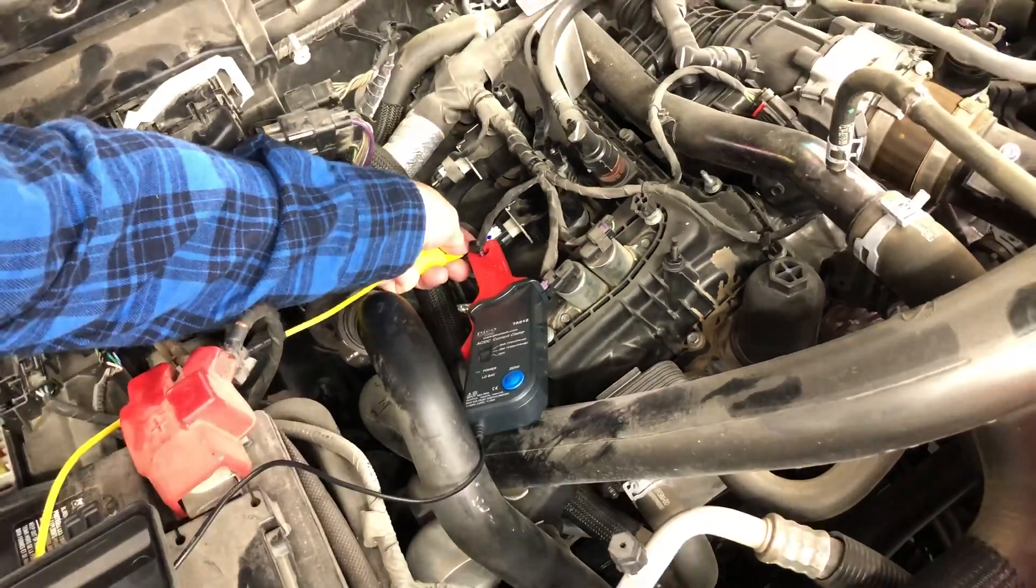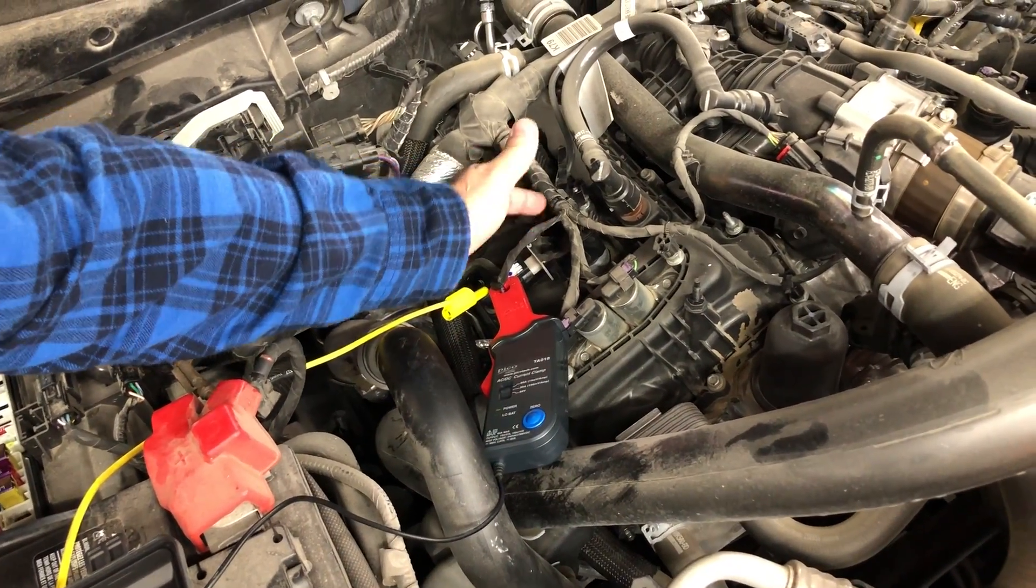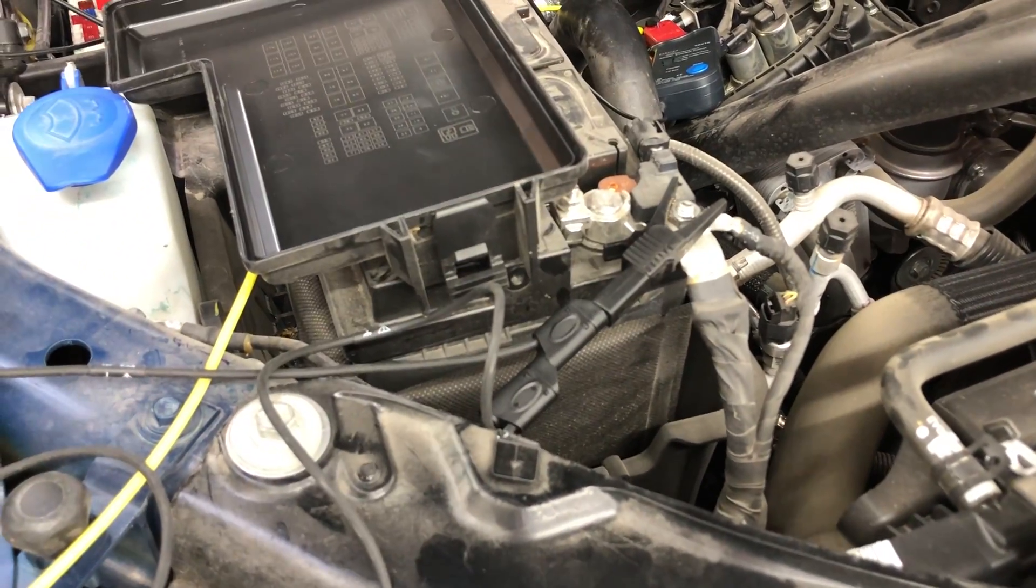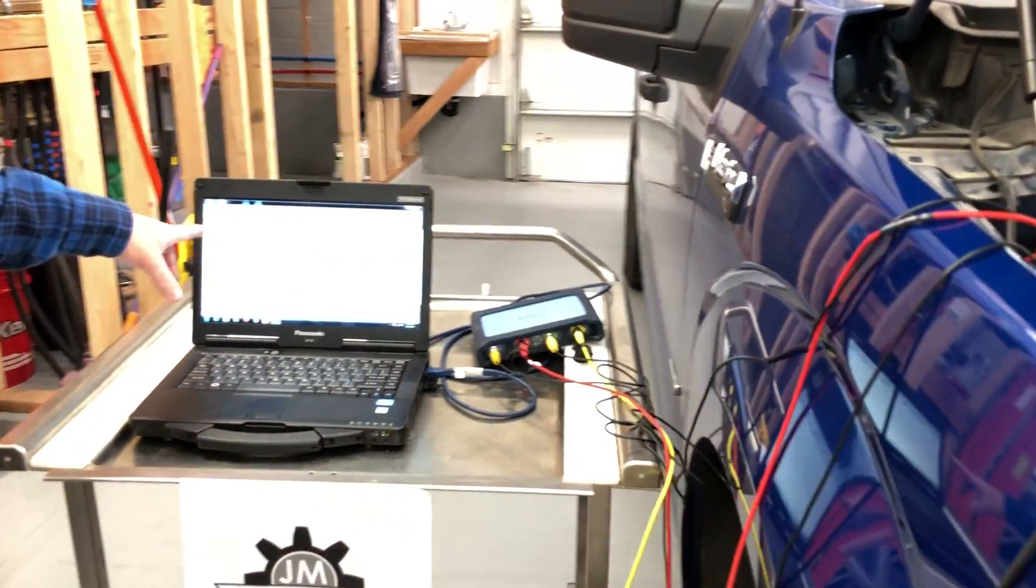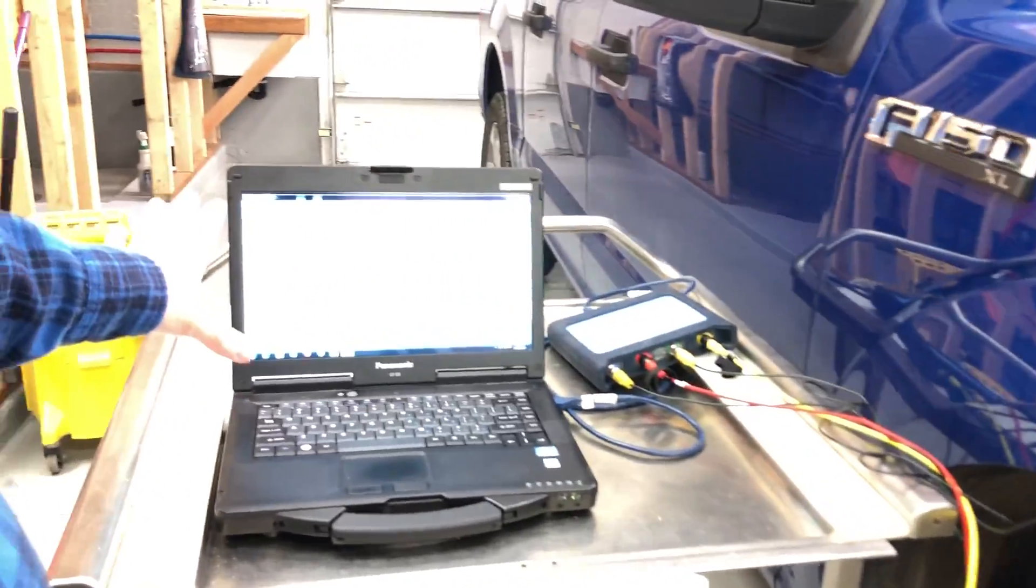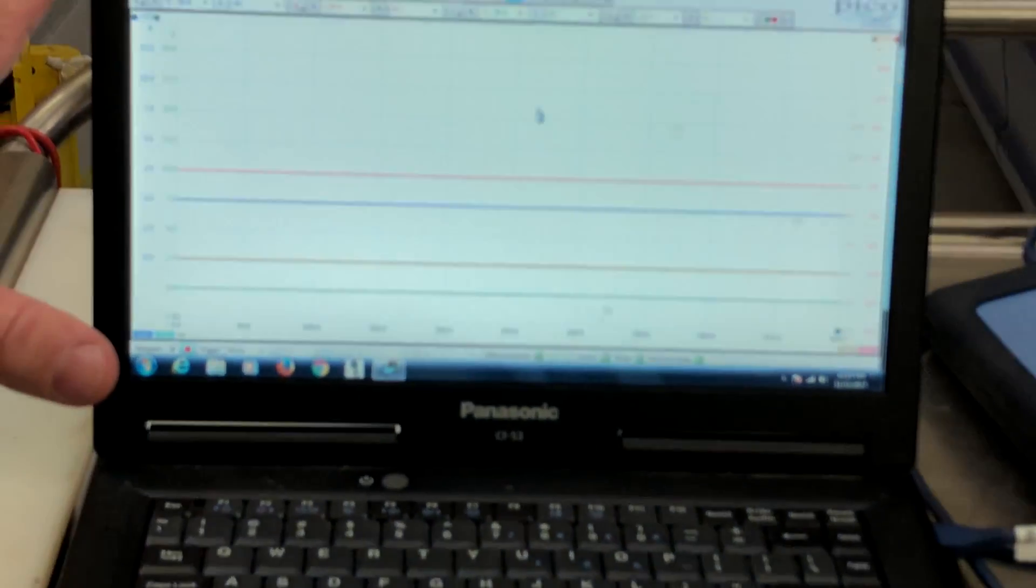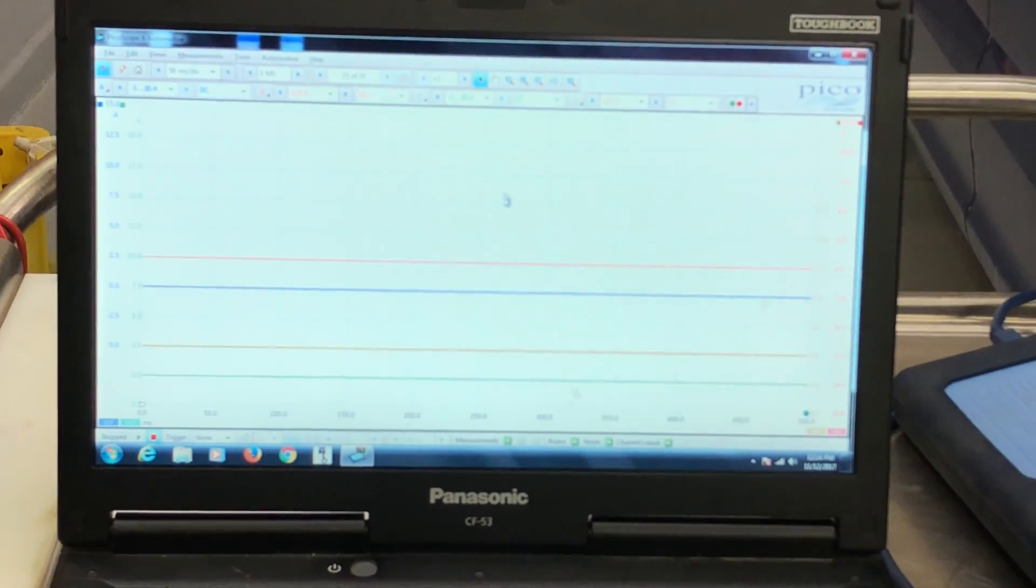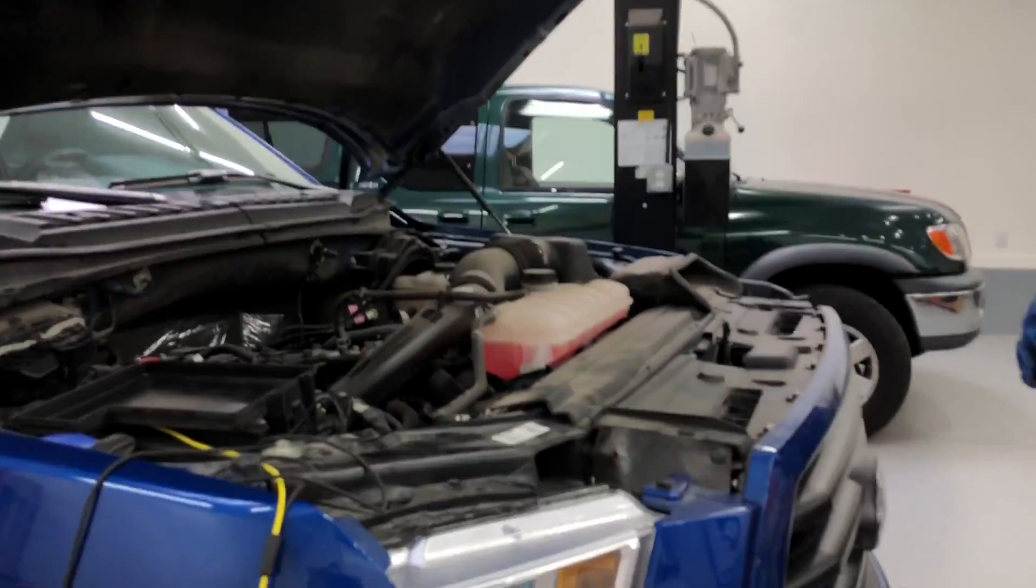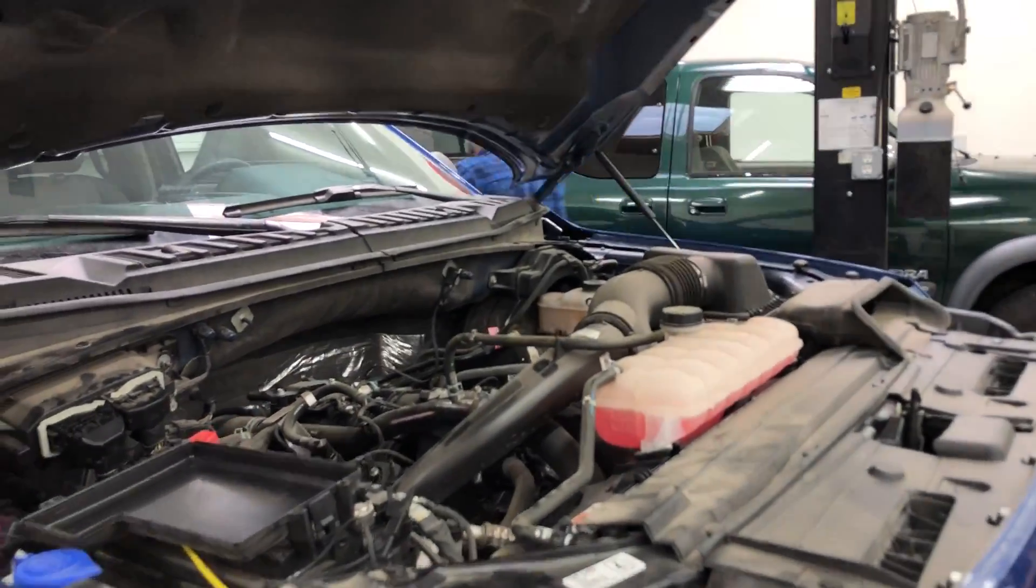This connection right here is for the trigger control to fire this coil. We're on a ground connection here with our two leads. We've already set up our scales, and now we're going to start the vehicle and look at what we've got for a pattern. I'll stop it, we'll look at it, and then we'll capture again with the coil unplugged.